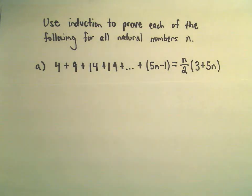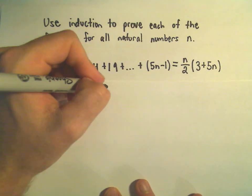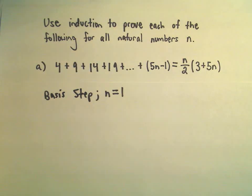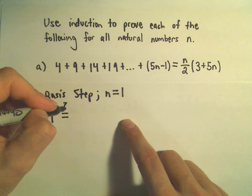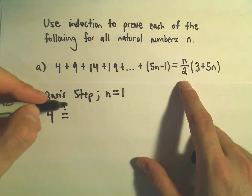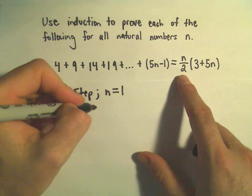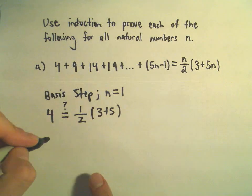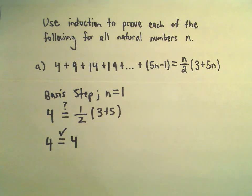The first thing I'm going to do is the basis step. I'm going to show that this is valid for n equals 1. If we use n equals 1 on the left, we'll just be left with 4. On the right side, if we plug it in — I put a little question mark because I'm trying to verify these are equal. If we plug in 1, we'll get 1 half and then we'll have 3 plus 5, which gives us 8 times 1 half, which is 4. So this is definitely true and valid.